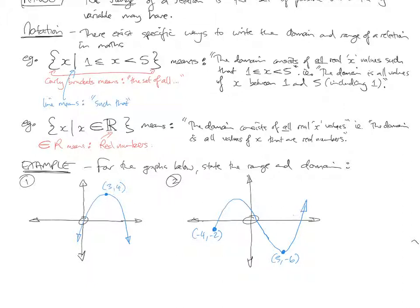Sometimes the x values of the domain or the range can be infinite — it can be any number. It's not just going to be between 1 and 5; the graph or relationship goes on forever. So in that case you would write curly brackets, x such that x belongs to — this looks like a curly capital E and then a blocky R — which together means all real numbers. If you write that, the domain consists of all real x values. Real numbers are any negative or positive numbers. You'll only deal with non-real imaginary numbers if you do specialist maths — those are square roots of negative numbers.